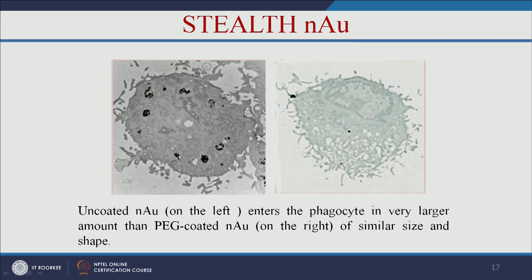Here is an example: an uncoated gold nanoparticle enters the phagocyte — your immune cells. But when you use a polyethylene glycol-coated gold nanoparticle of the same size, it escapes from the immune system. There are no black dots visible, meaning no gold nanoparticles are taken up. The PEG-coated nanoparticle escapes the immune system, while the uncoated gold nanoparticle is taken up by the phagocyte.